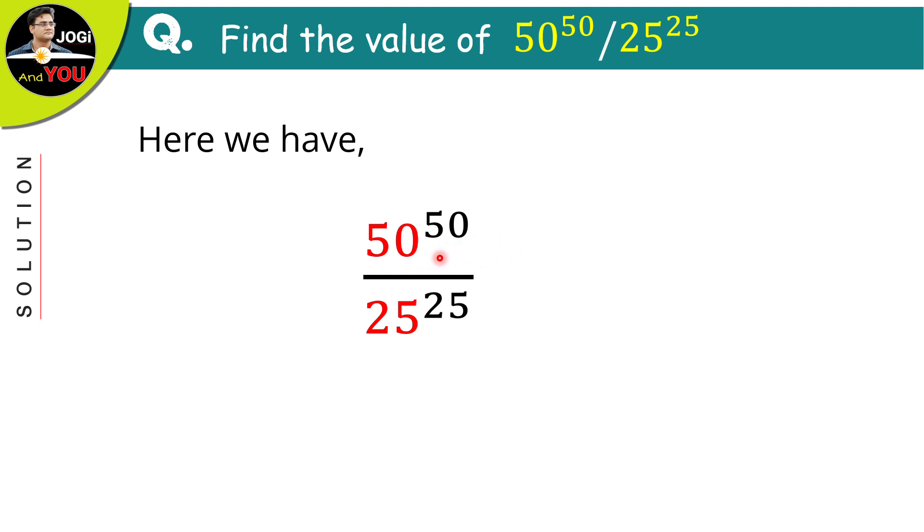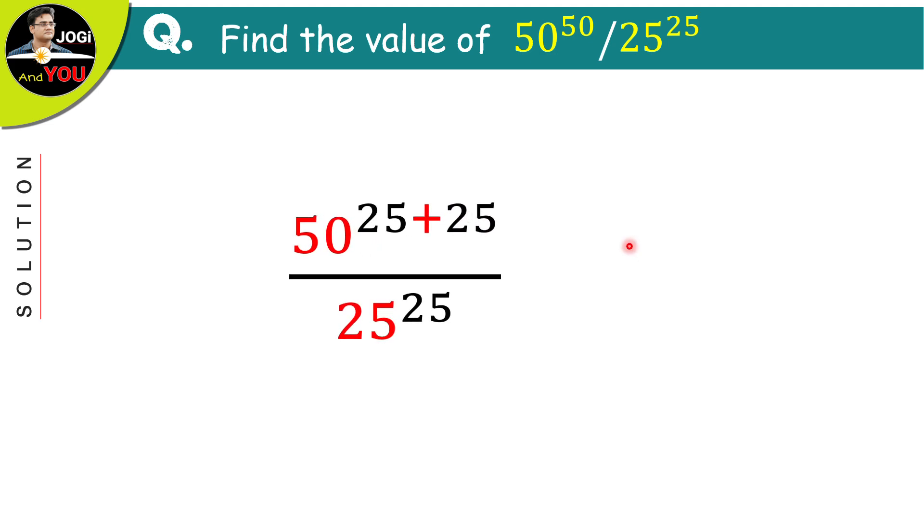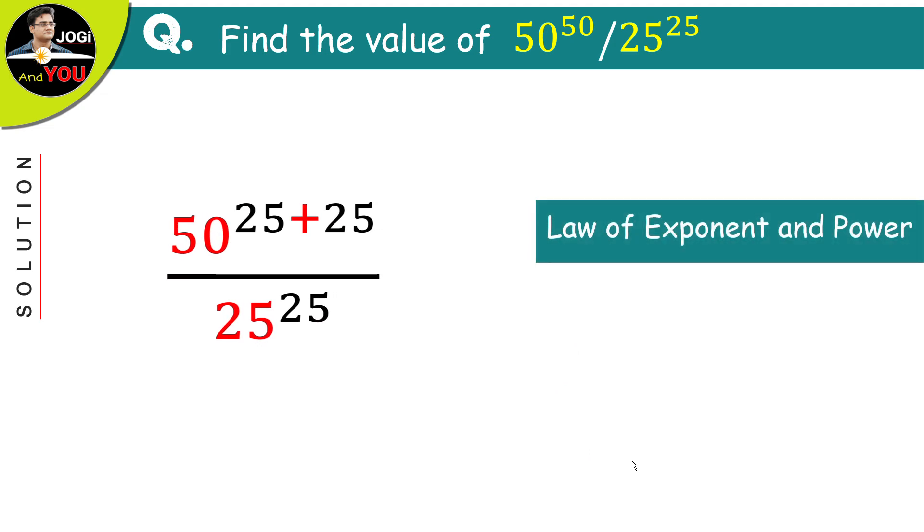So, I can rewrite the exponent 50 as 25 plus 25. Perfect. Still it is 50. But why did I do this? Because of the following fact that a sum has now appeared in the exponent.